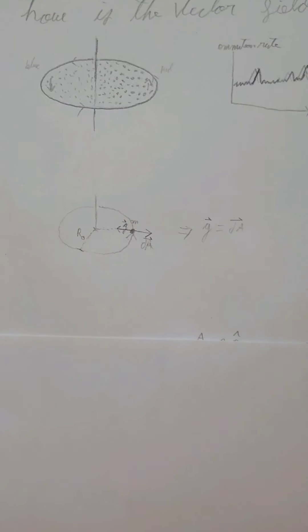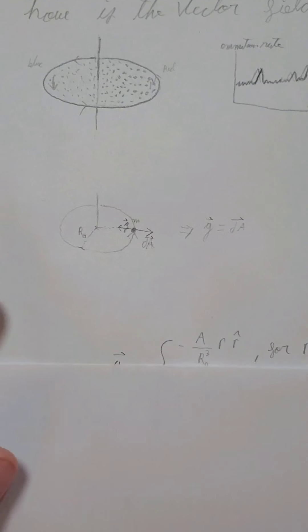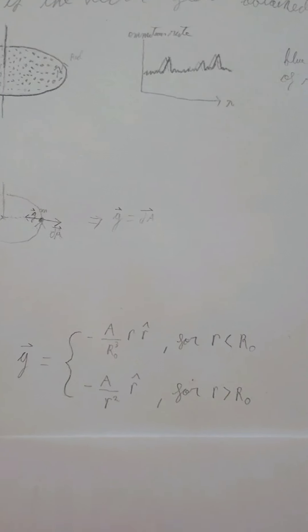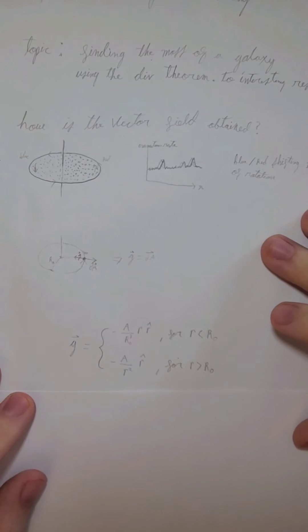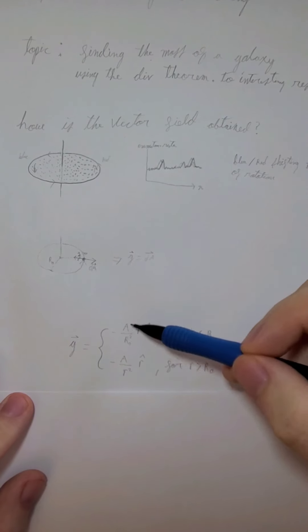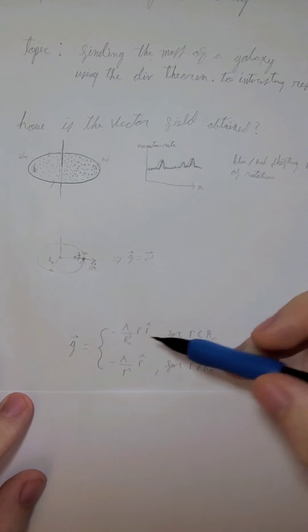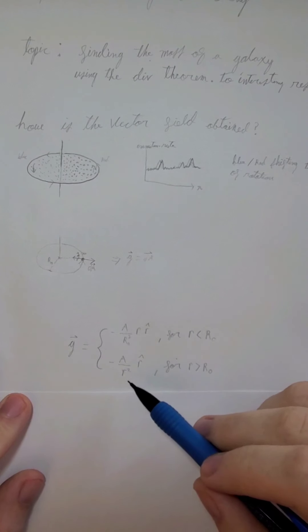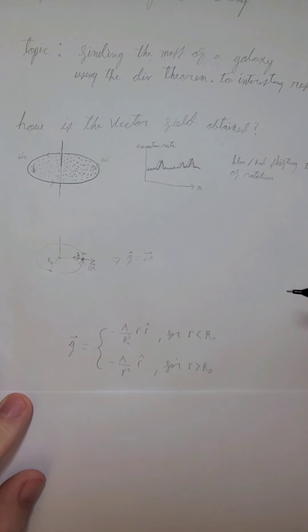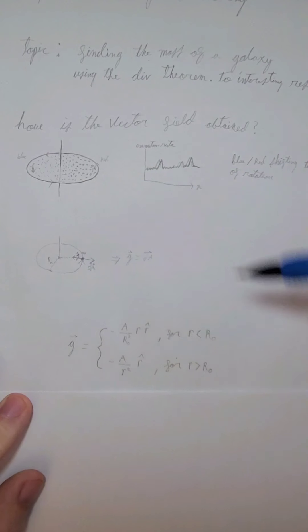So we are going to use this equation. This is a relatively simple vector field for gravity. Negative a over r₀ cubed times r times the unit vector r̂, and down here negative a over r squared times the unit vector r̂, respectively, for when r is less than the shape disk, the r₀, and for when it's greater than. When it's equal to r₀, it doesn't matter which one you use because they come out the same.